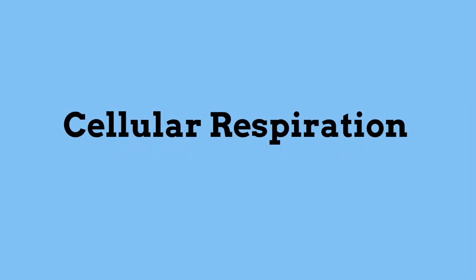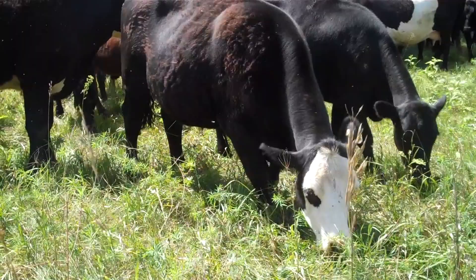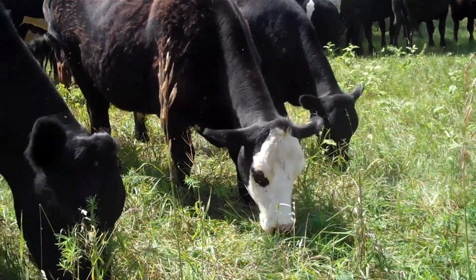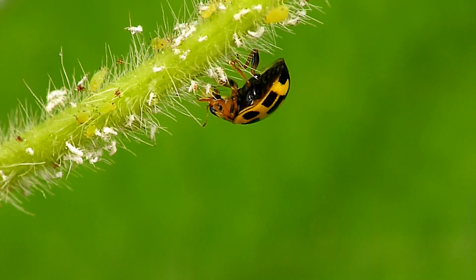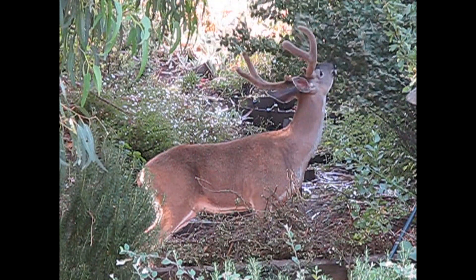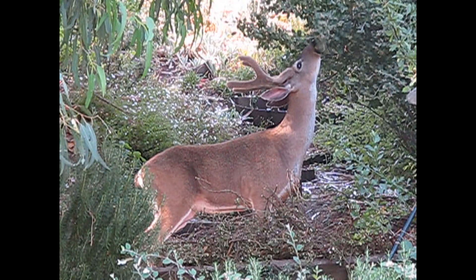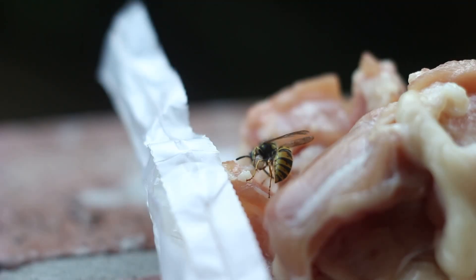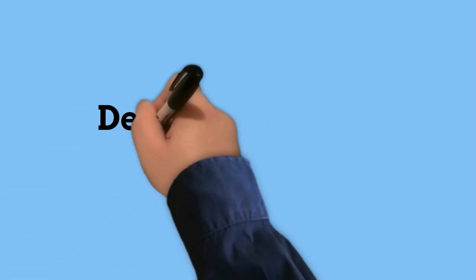Some heterotrophs eat only plants — these are called herbivores. Others eat only animals — these are called carnivores. Some animals eat both plants and animals and are called omnivores. Some heterotrophs feed on the dead organic remains of other organisms and are called decomposers.